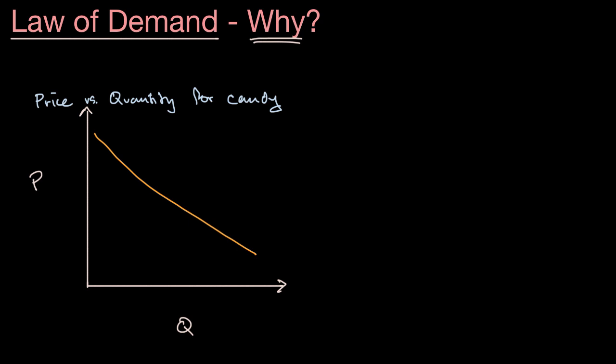So one category of reasons why you might want more of it as the price goes down, economists will call the substitution effect. And this is the idea that if we're looking at the price versus quantity, say, of candy...